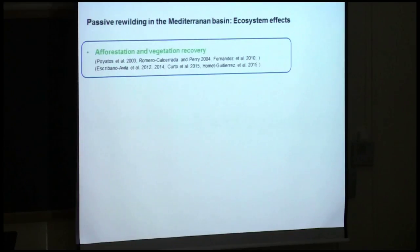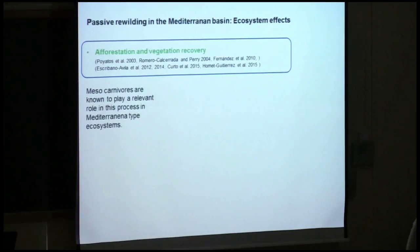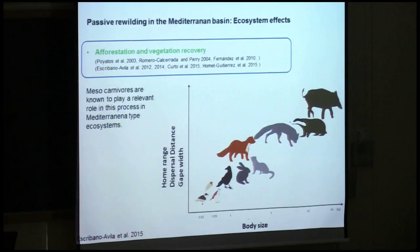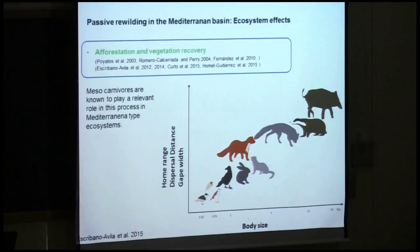For afforestation and vegetation recovery in areas subjected to passive rewilding, meso-carnivores are a key element in the ecosystem. In the Mediterranean, the first plants that colonize areas subjected to passive rewilding are usually shrubs bearing fleshy fruits, and fleshy fruits are dispersed by a wide array of vertebrates. Meso-carnivores are among the most frequent dispersers in these areas, and they have traits such as large body size that make them especially effective dispersers, with wide home ranges, large dispersal distances, and gut width.